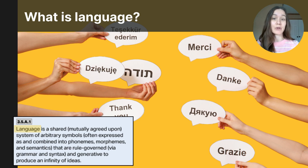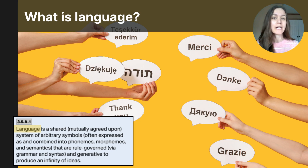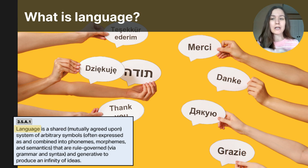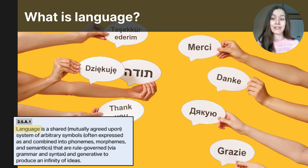Language is communication — our shared way of expressing our thoughts and ideas. Language can be spoken with our mouths, written with pencil and paper, and signed with our hands. Language is more than just sounds, symbols, and gestures; it's actually a complex system with rules. Our ability to use language is remarkable because we can pull from thousands of words in our memories and follow a complex set of rules to express our ideas quickly and accurately. In this video, I will break down the different components of language and how we acquire it.